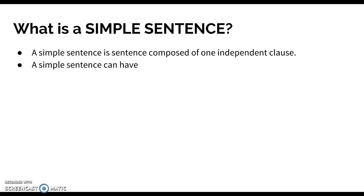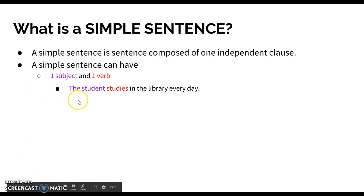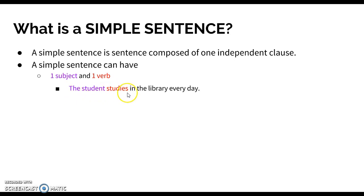We have four different combinations of simple sentences. A simple sentence can have one subject and one verb. For example: 'The students study in the library every day.' The student is the subject and the verb is studies.